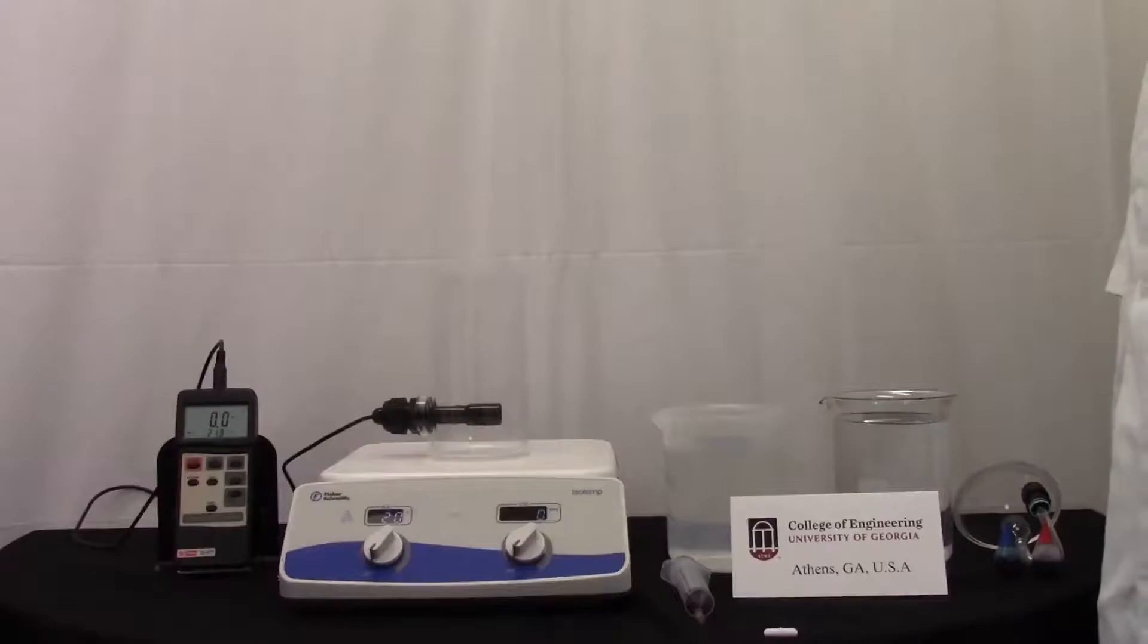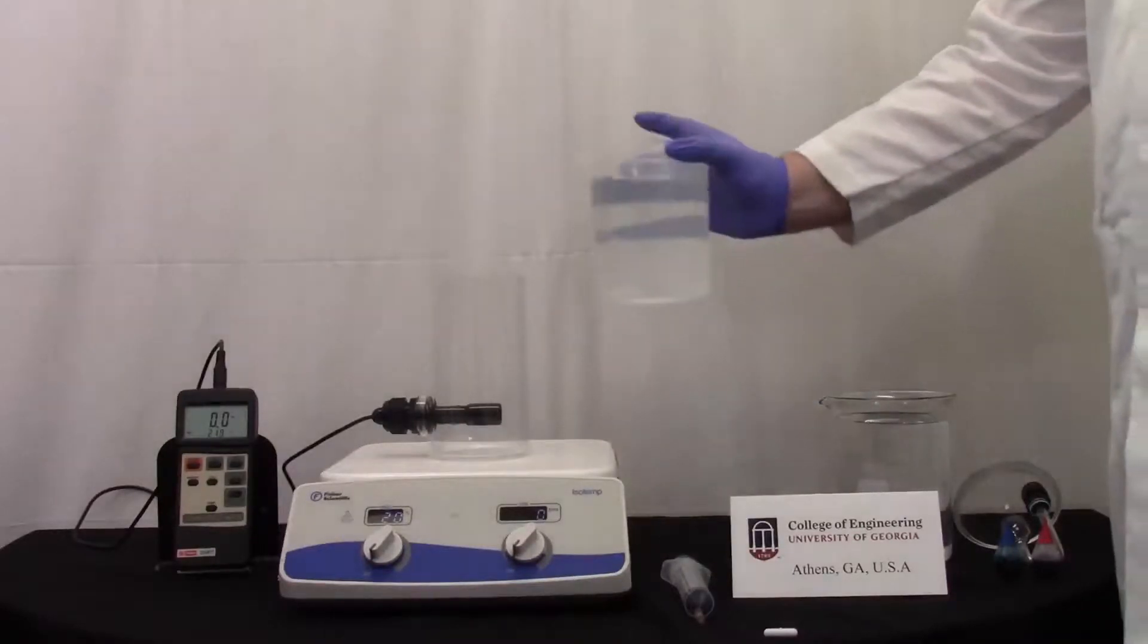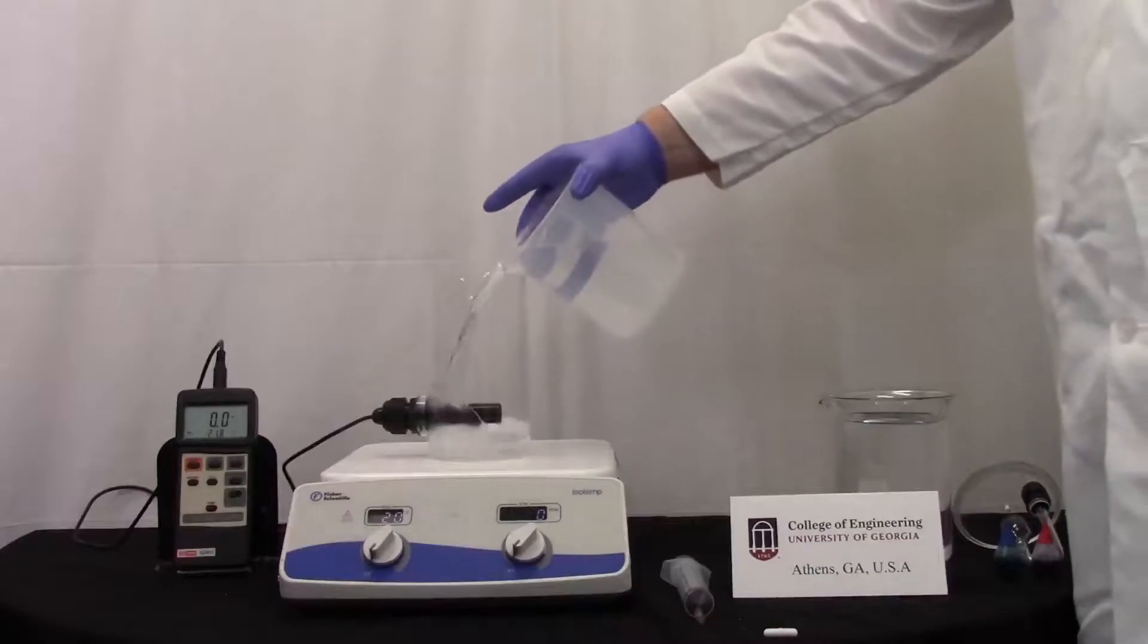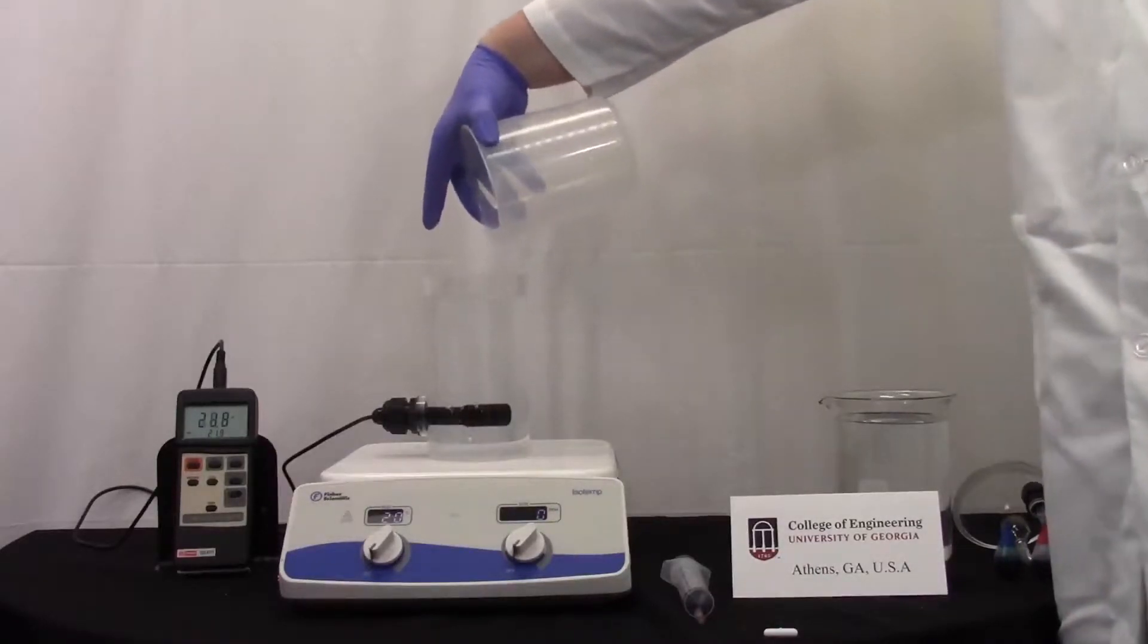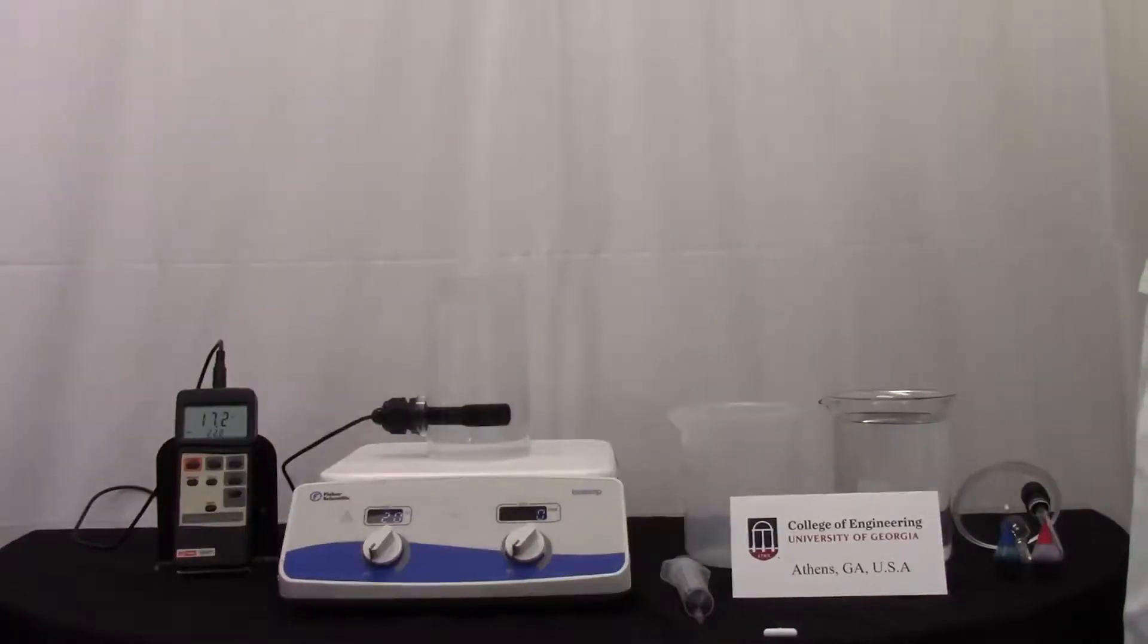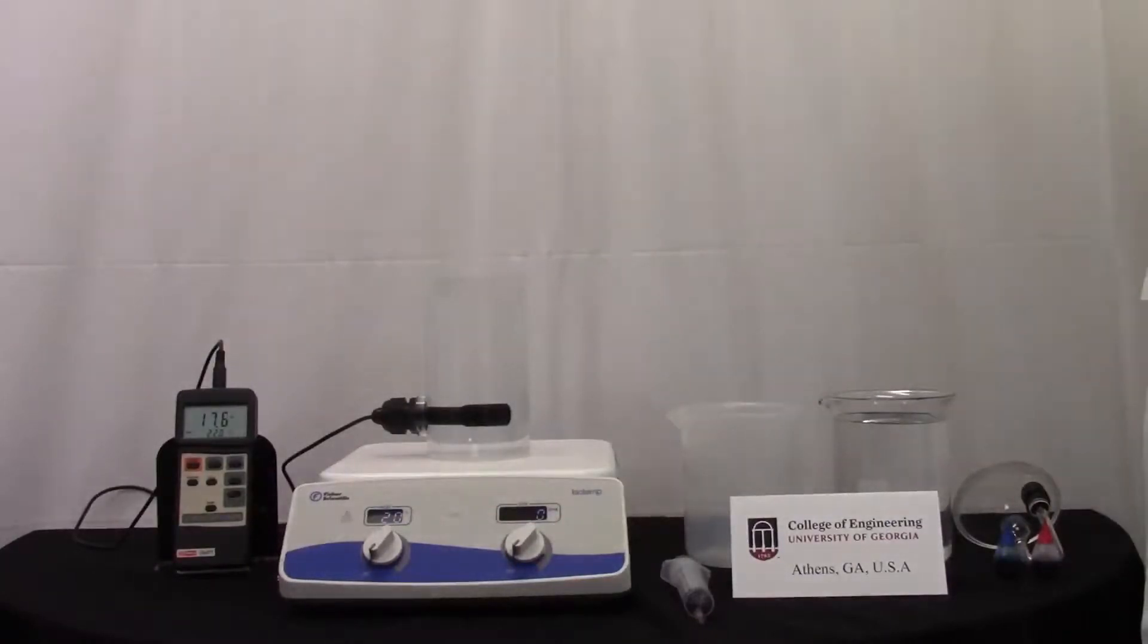Now pour one liter of water into the diffusion vessel and turn on the stir plate. Put the stir bar into the diffusion vessel, making sure that it is at the bottom.